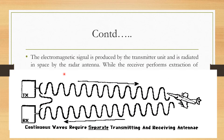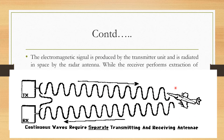Basically, the electromagnetic signal produced by the transmitter unit of the radar is radiated in space by the radar antenna. If the target is present, the echo signal is generated. There are two possibilities: the echo signal frequency may be greater than or less than the transmitter frequency. By comparing both frequencies, you are able to understand the moving nature of the target.